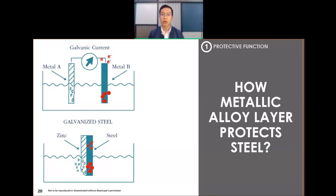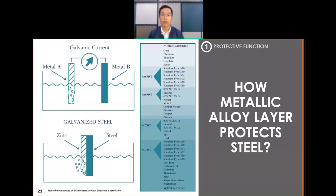This phenomenon is called a galvanic reaction - a basic science principle you can find online. Under the galvanic table, one end of the spectrum is noble or cathodic, and the other end is anodic or active. If two different metals are paired and one is more active than the other, the more active one will sacrifice itself to protect the less active, more noble metal.